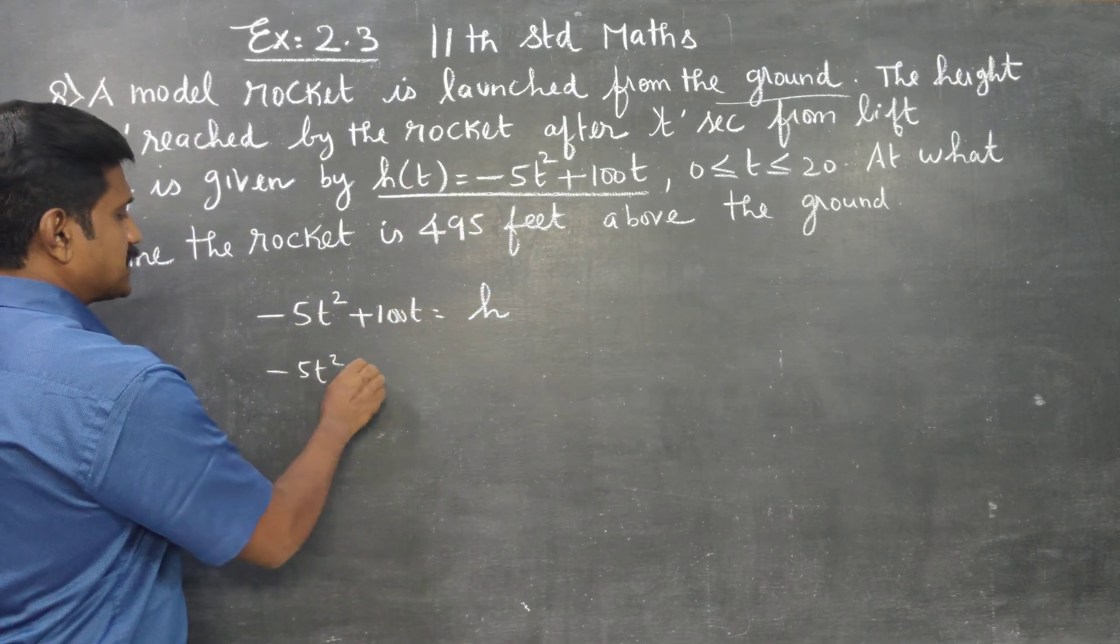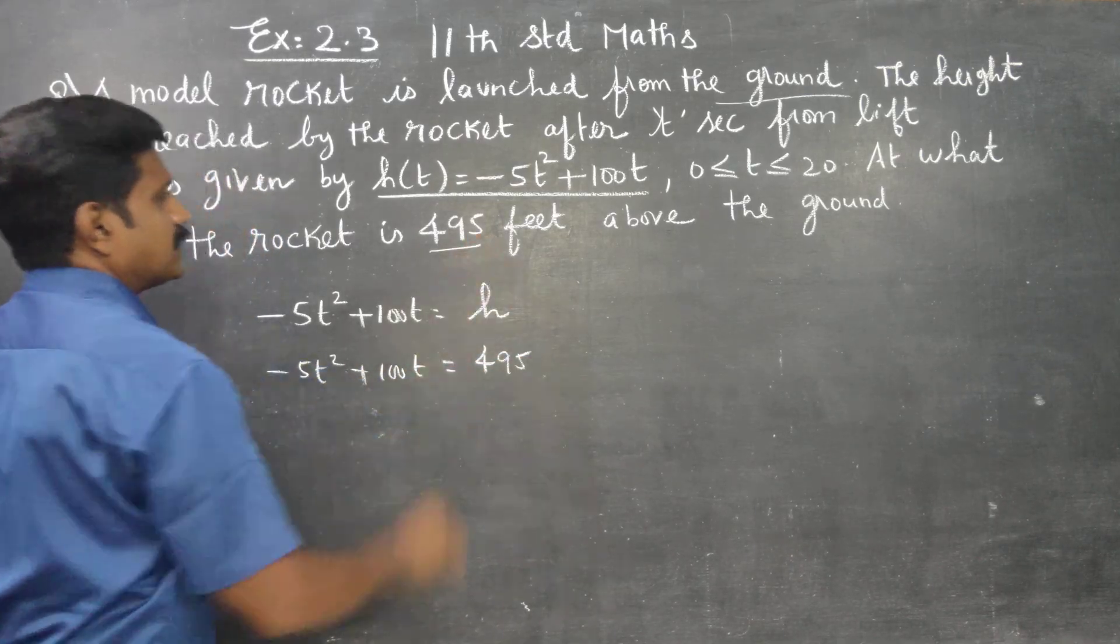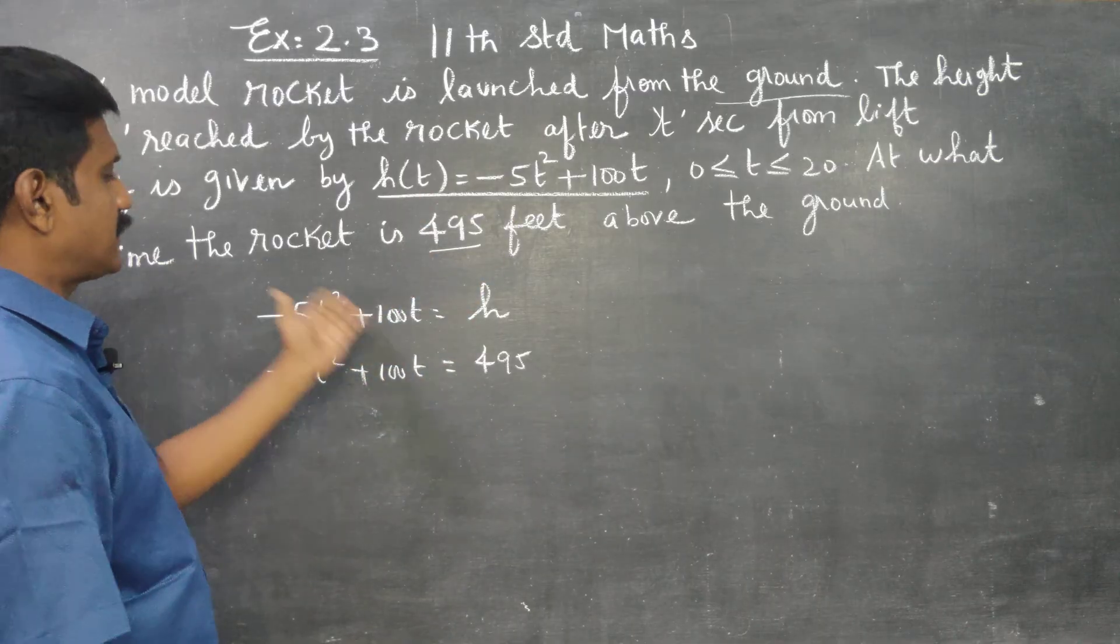The equation is -5t² + 100t = 495. Rearrange to equal 0. Find that time. What time? The time to reach 495 feet.